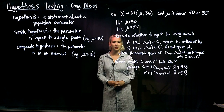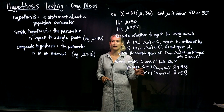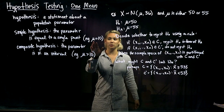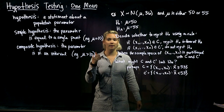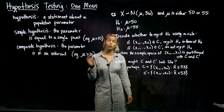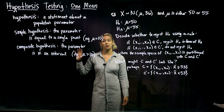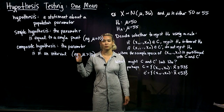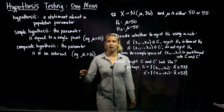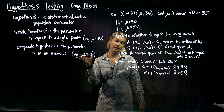There are different kinds of hypotheses: we could have a simple hypothesis or a composite hypothesis. If we have something like mu equals 10, that's a simple hypothesis because we're saying the parameter is equal to a single point. With a composite hypothesis, we're saying the parameter is in an interval — for example, mu is greater than 10.